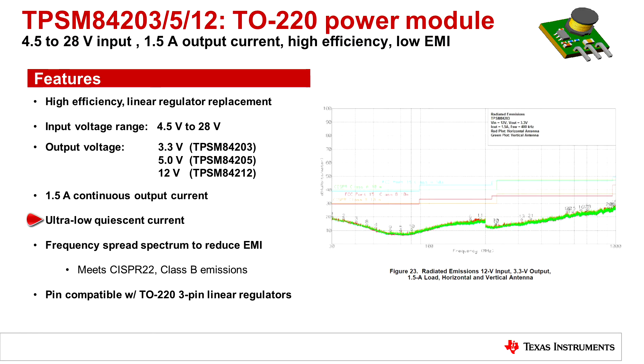They have ultra low quiescent current and meet CISPR22 Class B emissions. All three of these devices are pin compatible with TO-220 3-pin linear regulators.